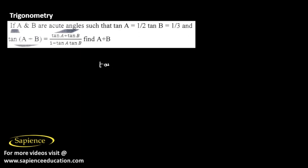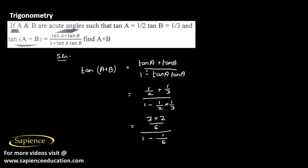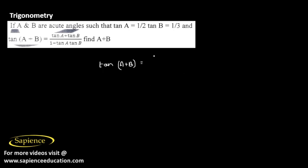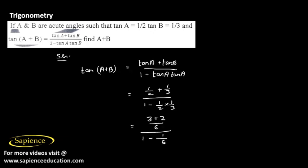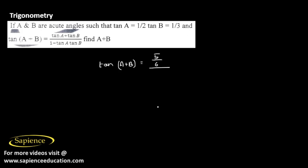So tan(A + B) equals 5/6 divided by 1 - 1/6. Again by cross multiplication, (6 - 1)/6 equals 5/6 divided by 5/6.